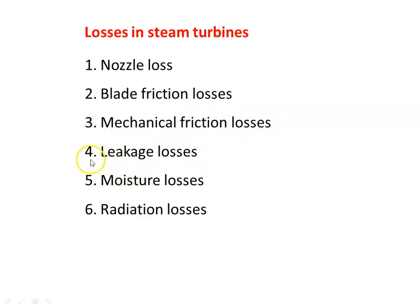The fourth type is leakage losses. The steam inside the turbine is at very high pressure, while the outside is at atmospheric pressure. There is every possibility of steam leakage because of this pressure difference. We have glands and airtight joints in the steam turbine, but despite these measures, there will be some leakage of steam, resulting in leakage losses.